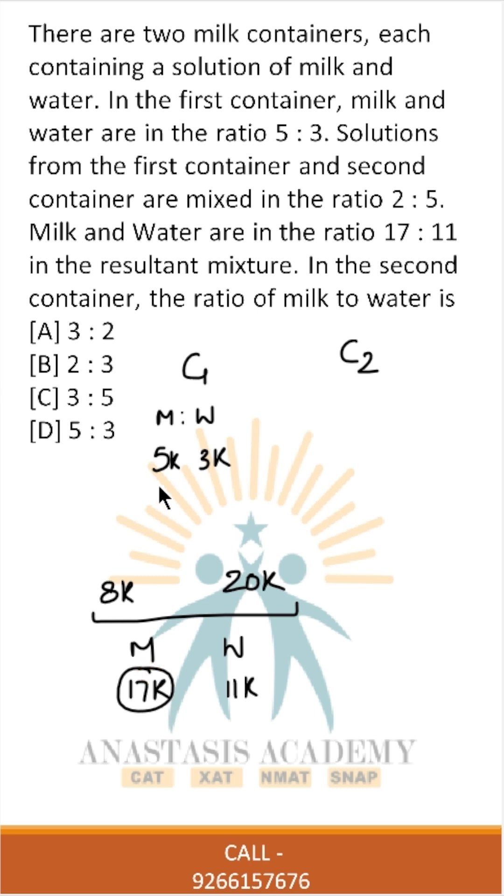We know out of this 17k, 5k milk came from here. So the remaining milk will come from here, 12k. And out of this 11k, 3k water came from here. So the remaining water of 8k will come from here. This is all about container 2.